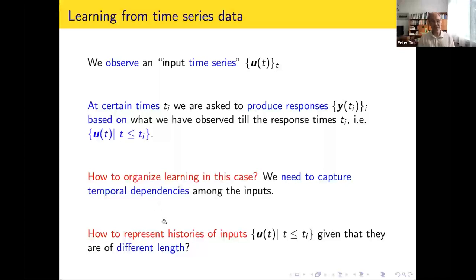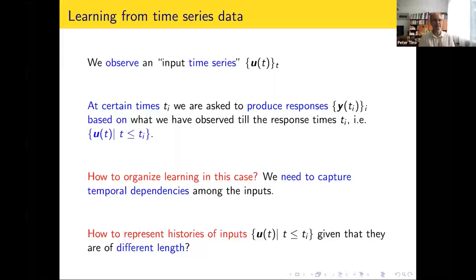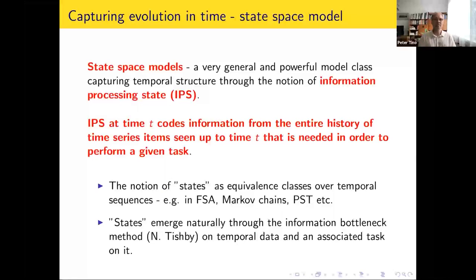I immediately have two questions to answer. First, how to organize learning — we need to capture temporal dependencies among the inputs, as opposed to the usual setting where inputs are i.i.d. from some distribution. Here the inputs are temporally correlated or dependent and I need to capture that. Second, how am I going to represent the input histories? Because at every time t_i, I have seen more and more inputs — my input is the whole series seen up to t_i, which is of different length.